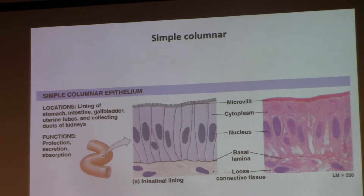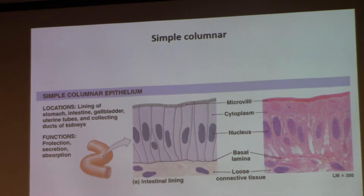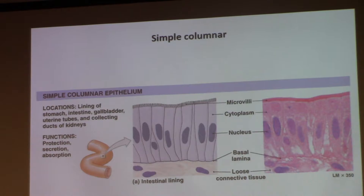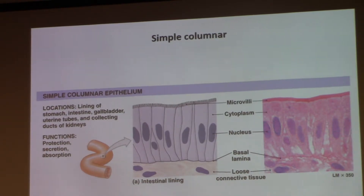Why do I care about microvilli? Whenever you see epithelia with microvilli, your first thought is going to be: I know it's simple, I know simple is good for diffusion and absorption. The fact that it has microvilli must mean it's really good at it, because microvilli increases the surface area. And that's really important in physiology. The more surface area, the more opportunities for diffusion to take place. So simple columnar without microvilli is not as good at diffusing as simple columnar with microvilli.